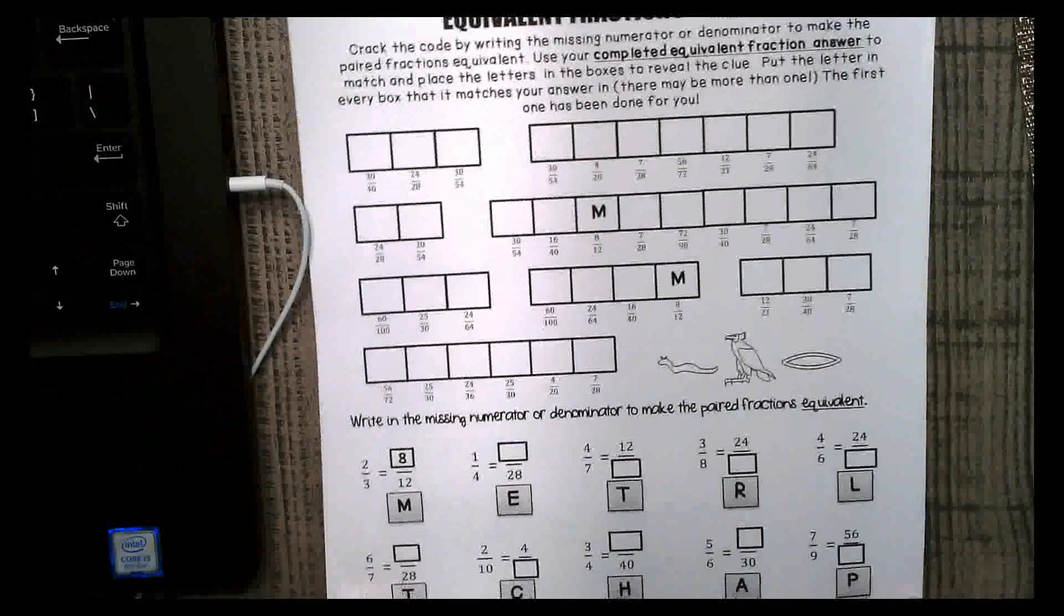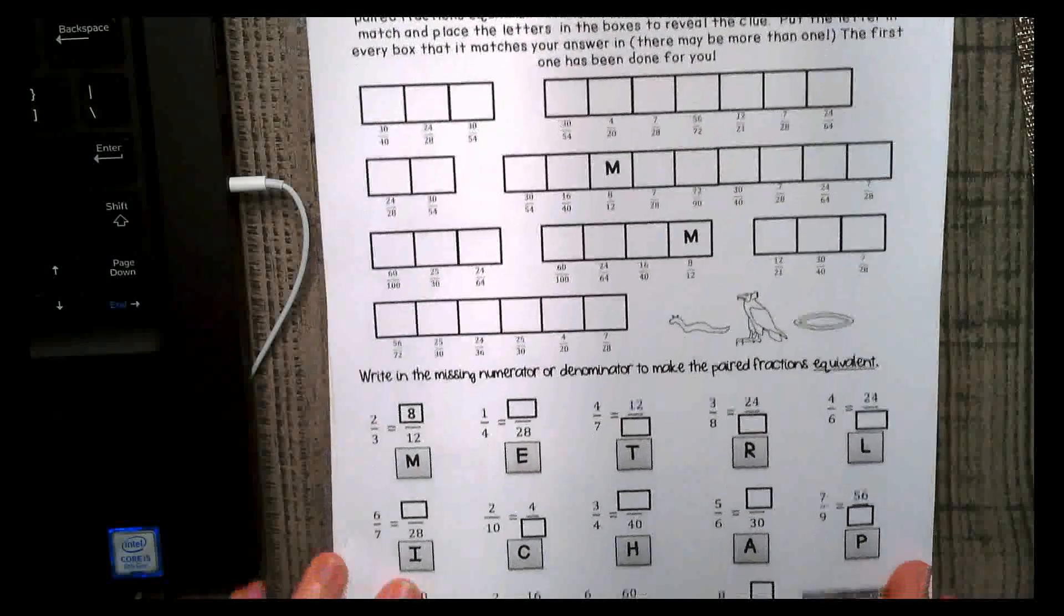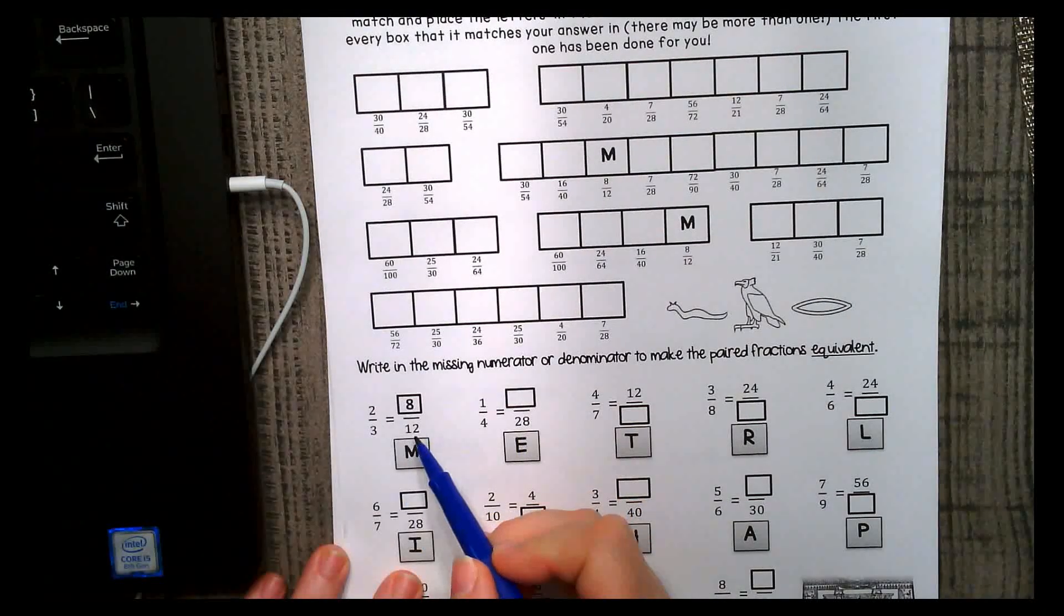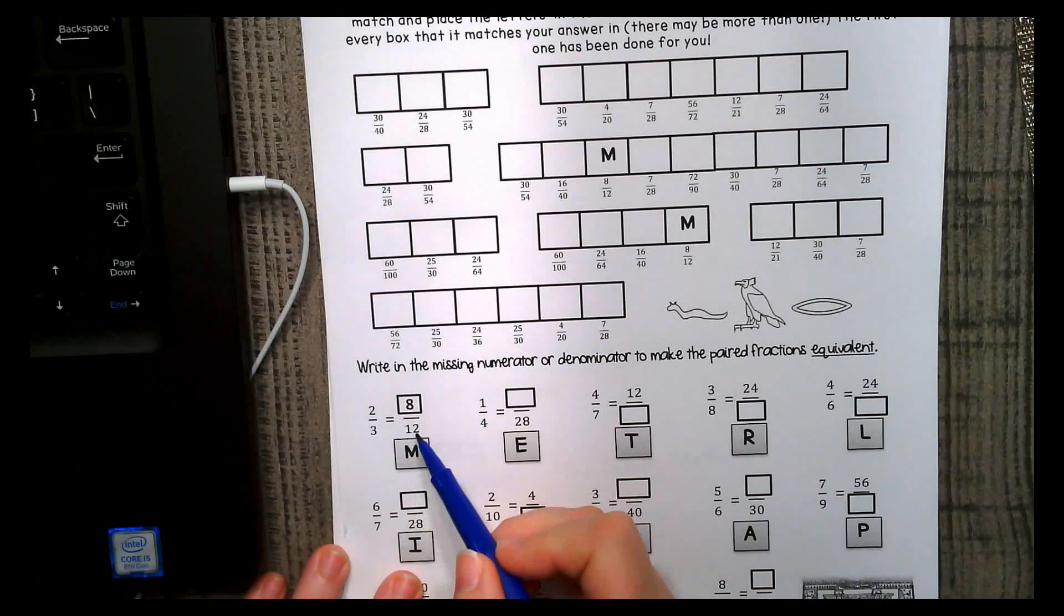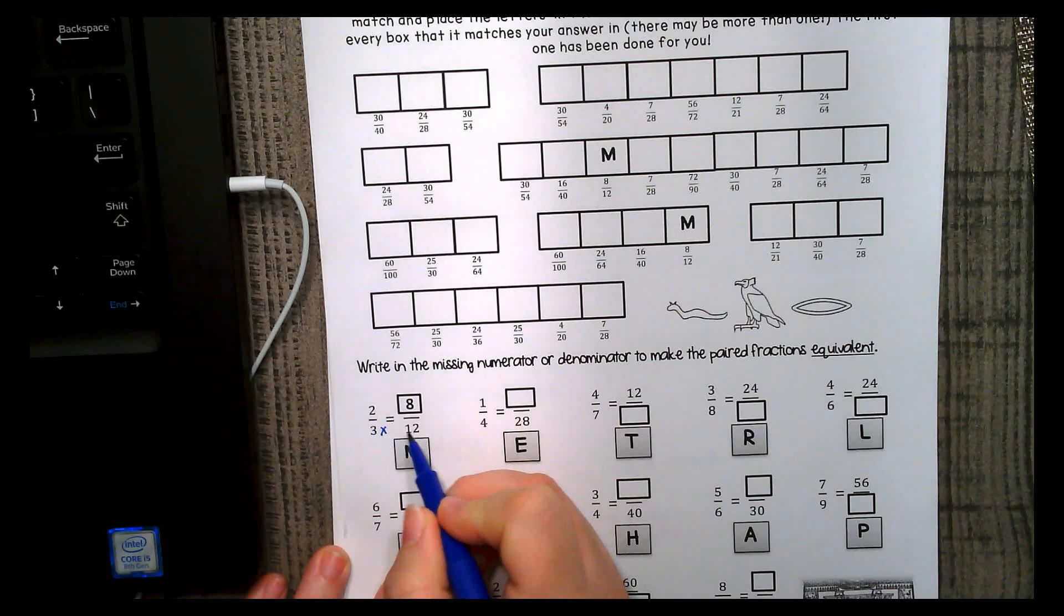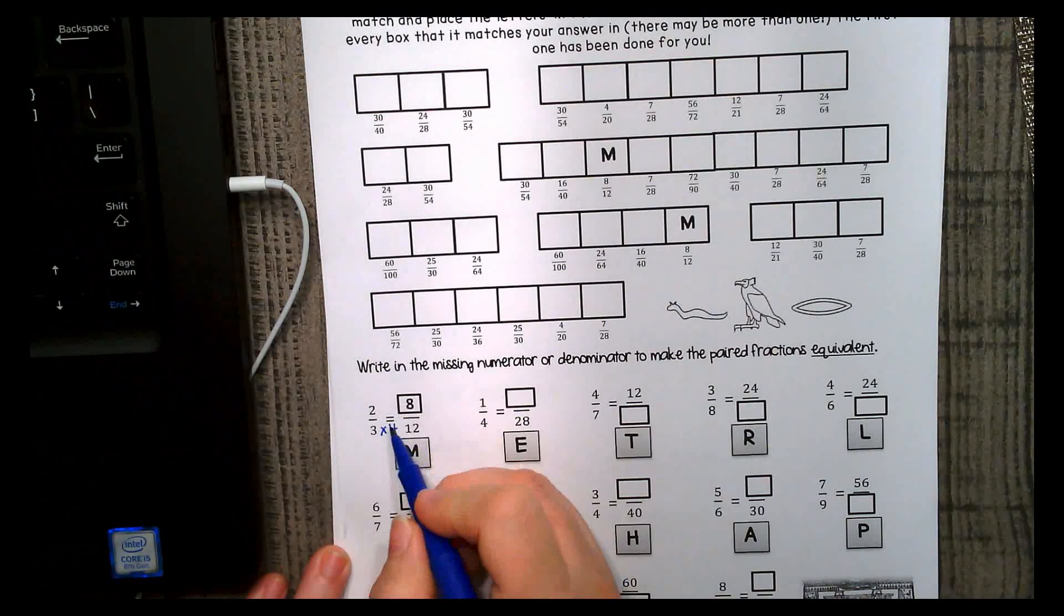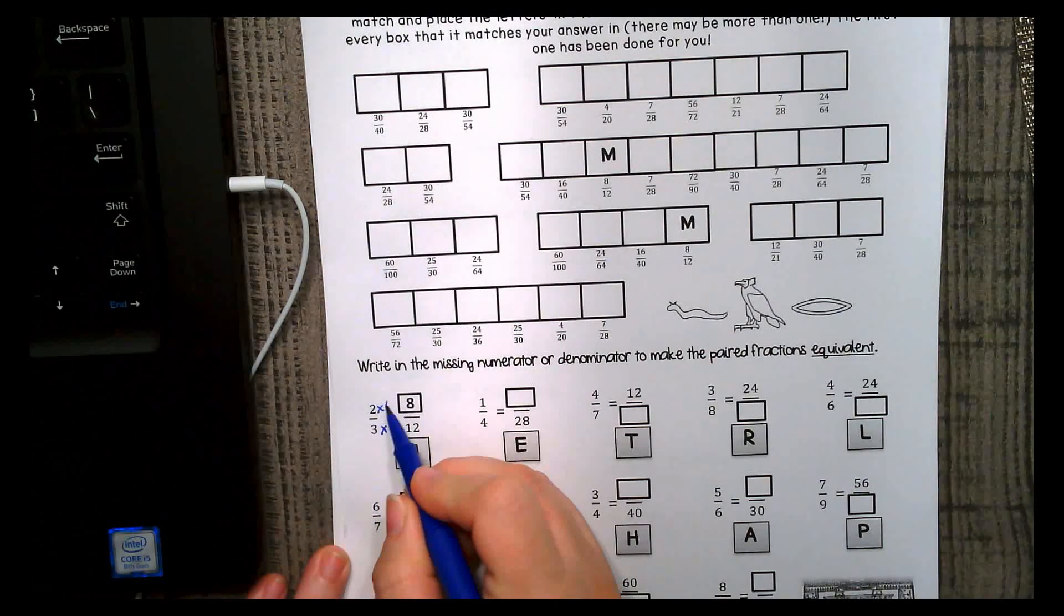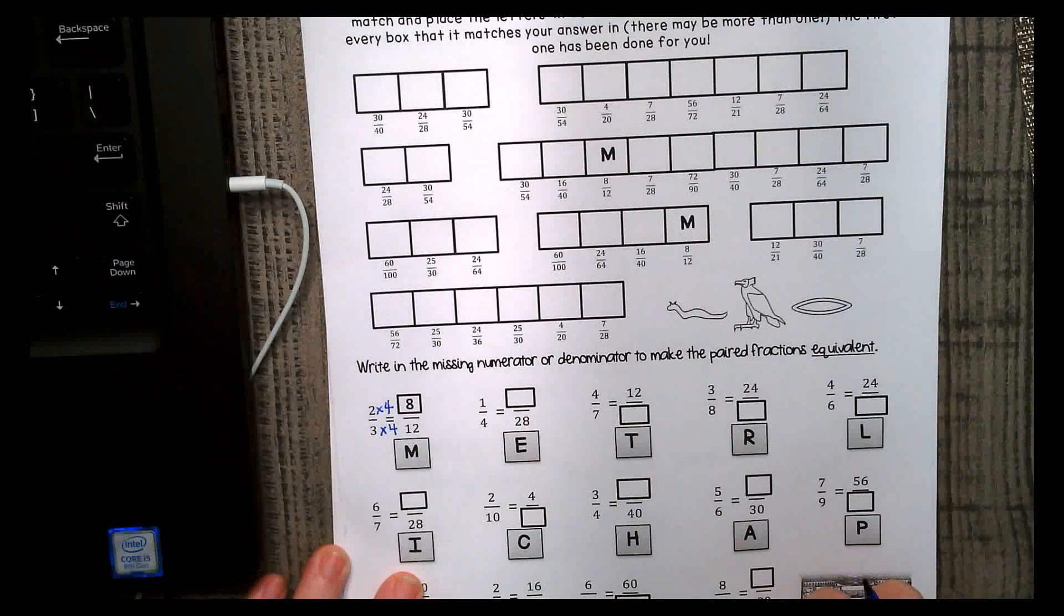Okay, so they've given you one of the equivalent fractions. Like here, they had 12, and over here is 3. So what times 3 makes 12? That's right, 4. So whatever you do to the bottom, you have to do to the top. That's how they got 8.